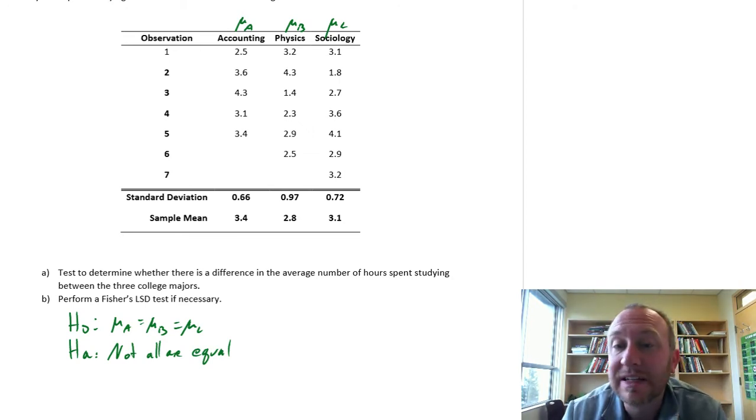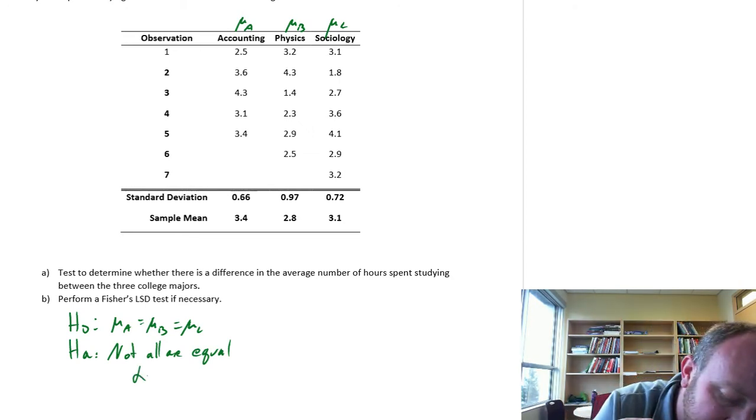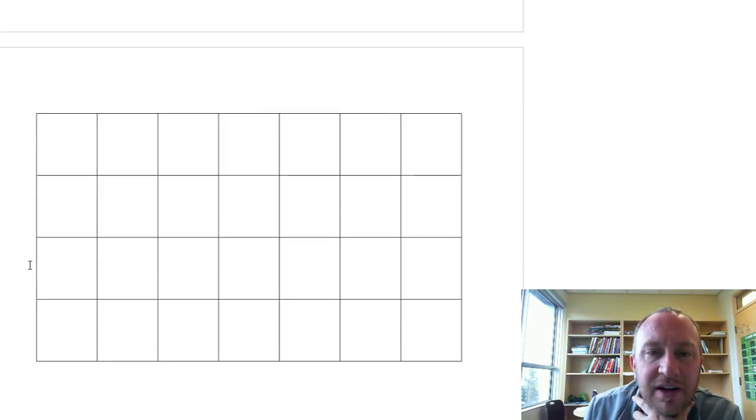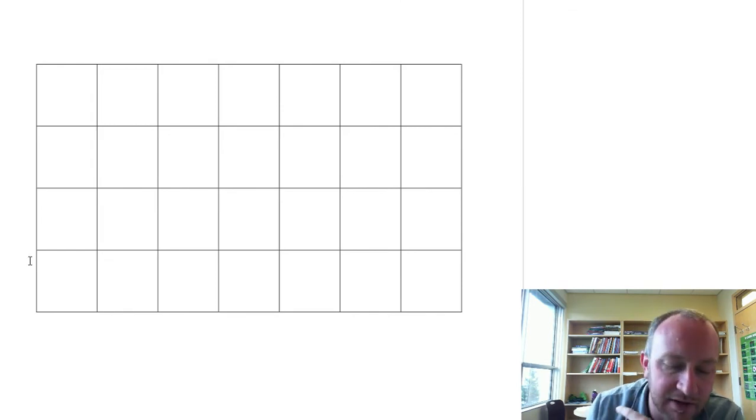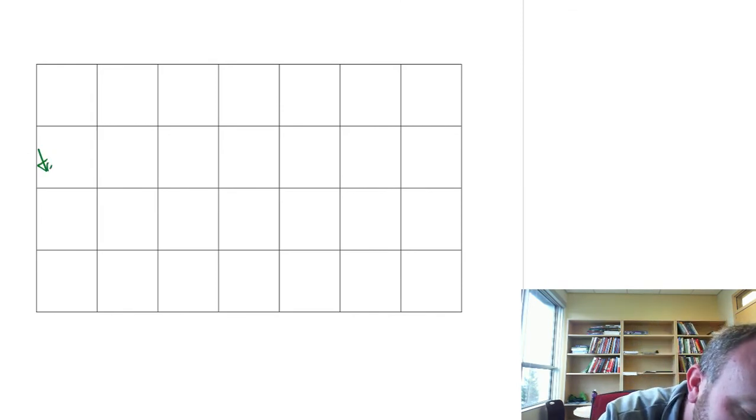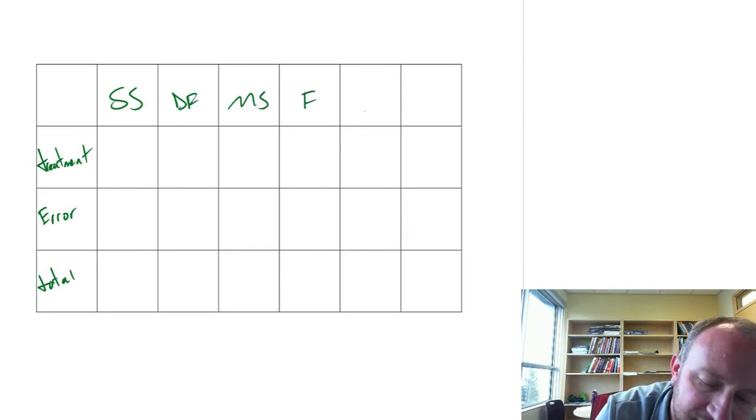So now we're going to complete our full ANOVA table just as we did in the first exercise, in the first video. So I've got a skeleton or a blank table down here and we'll just go ahead and fill this in. We'll have our treatments. We'll calculate error and total. And this I'll just use shorthand. This is going to be sum of squares, degrees of freedom, mean square, F statistic, P value and critical F.